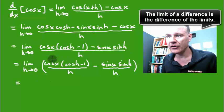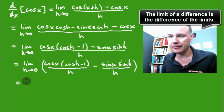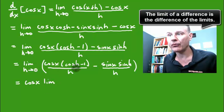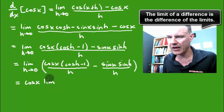Now when I take the limit of this fraction, you'll notice that this cosine of x—there is no h variable in it, so I can pull that out. It is a constant with regard to the limit.